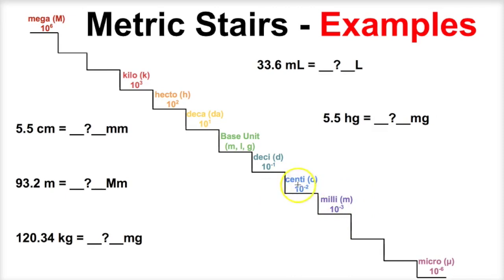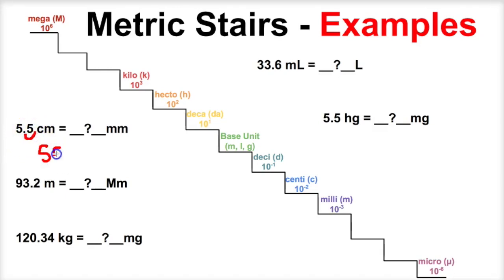How many steps on the metric stairs is that? Well, we need to take one step. And which way are we moving? If we go from centi to milli, we're moving down and to the right. So we have to move this decimal one time to the right. And if we slide this decimal over, what we will end up with is 55 millimeters. So five and a half centimeters is the same thing as 55 millimeters.